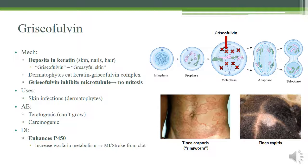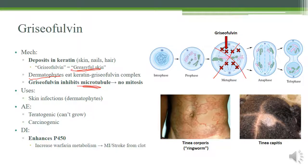Griseofulvin is similar to chemo drugs. It deposits into keratin — think 'greasy skin full of keratin' — accumulating in skin, nails, and hair. Dermatophytes eating that keratin get poisoned by the griseofulvin. It poisons them by inhibiting microtubules, blocking mitosis at metaphase. It's used predominantly for dermatophyte skin infections because that's where it accumulates.